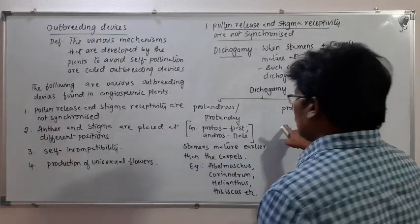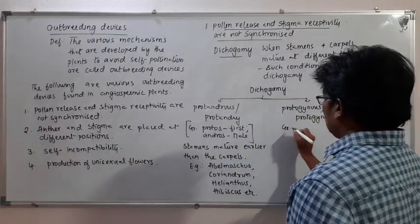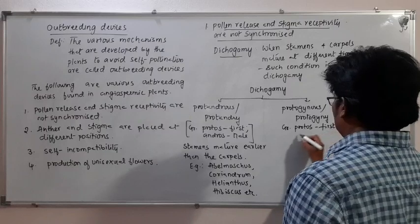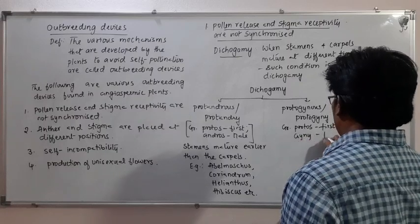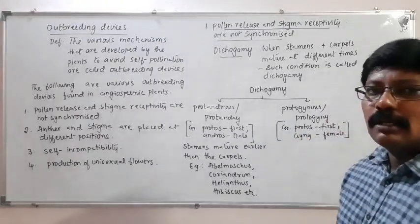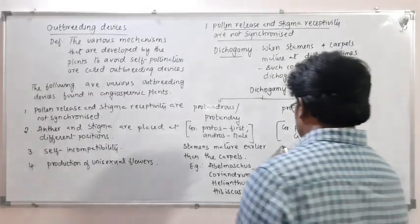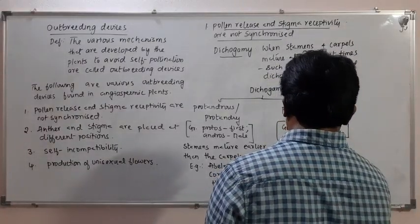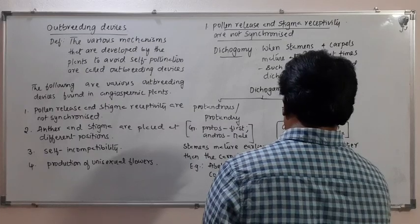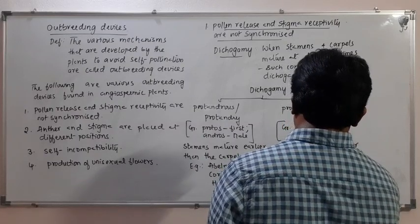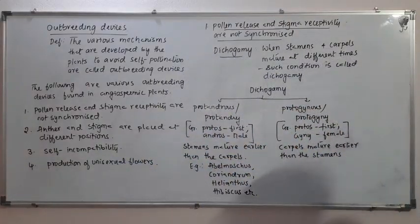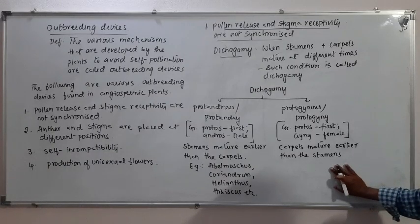Coming to protogyny: here 'protos' means first and 'gynae' means female. So it is the female reproductive organ that matures earlier than the male. That is, carpels mature earlier than the stamens — this condition is called protogyny. Examples include Mirabilis, Ficus, and Annona.